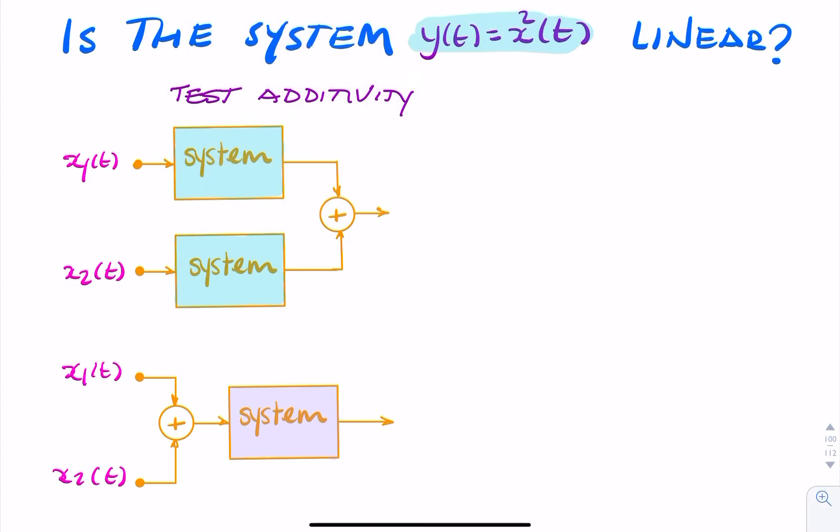Let's take our inputs and apply them to the output. At the output of each system, we should get x squared. So x1 will be x1 squared, and x2 will give me x2 squared.